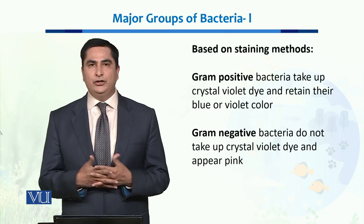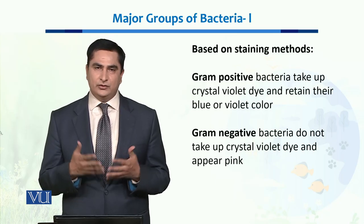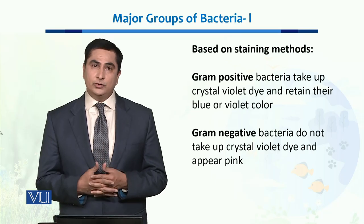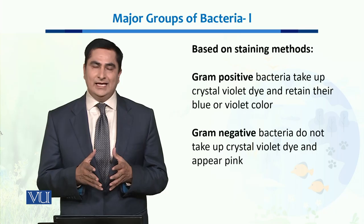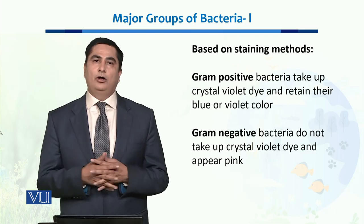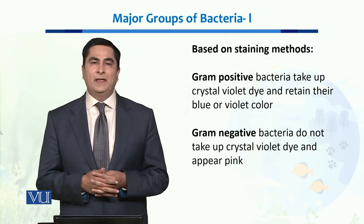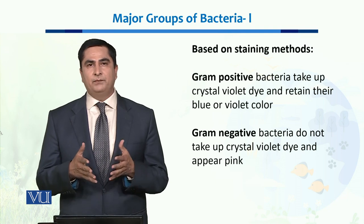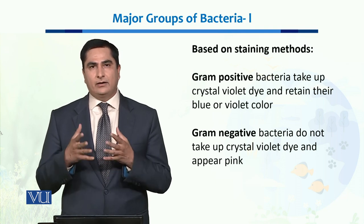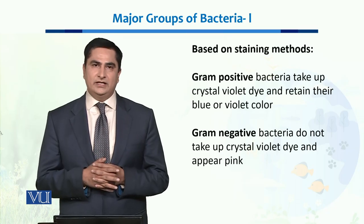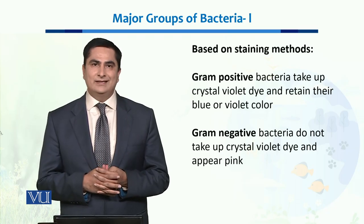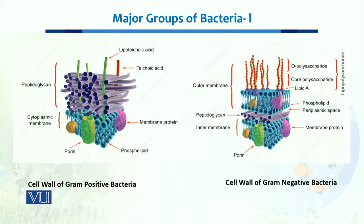He used the crystal violet dye to stain bacteria. Those bacteria which can retain the crystal violet dye even after washing are called gram positive bacteria, while those bacteria that lose their crystal violet dye after the washing procedure are known as gram negative bacteria.